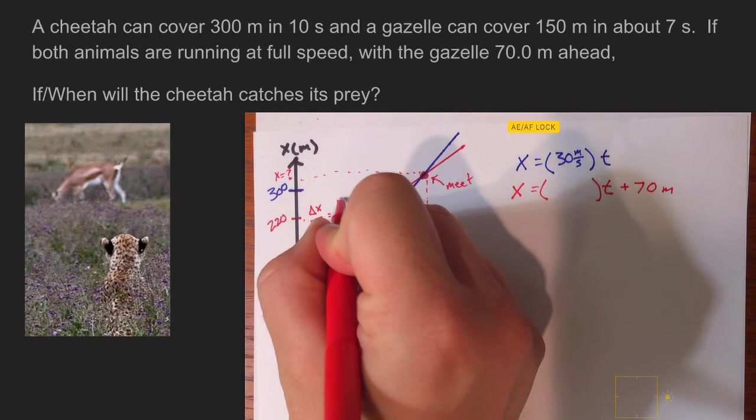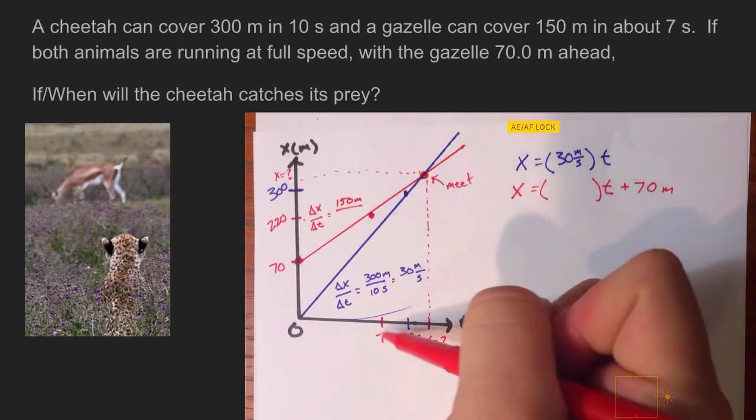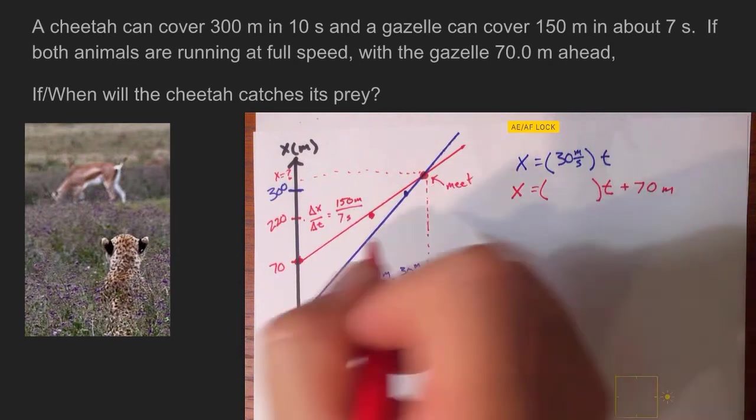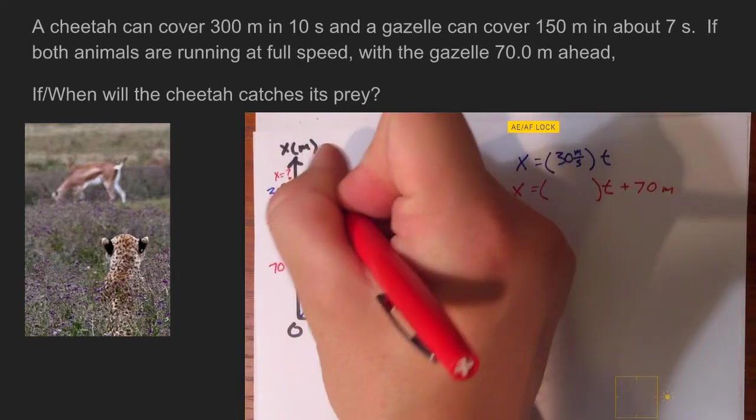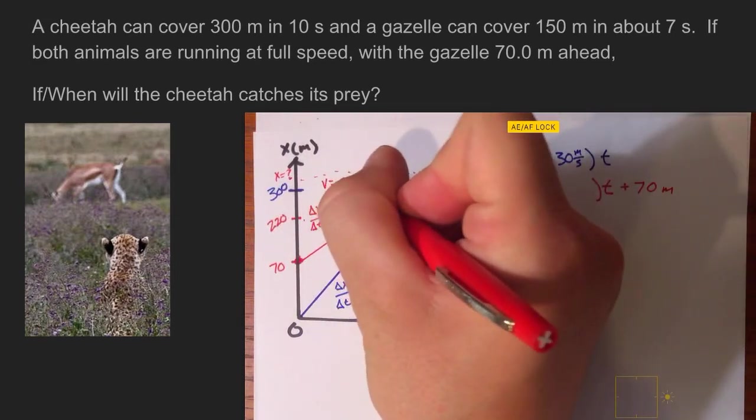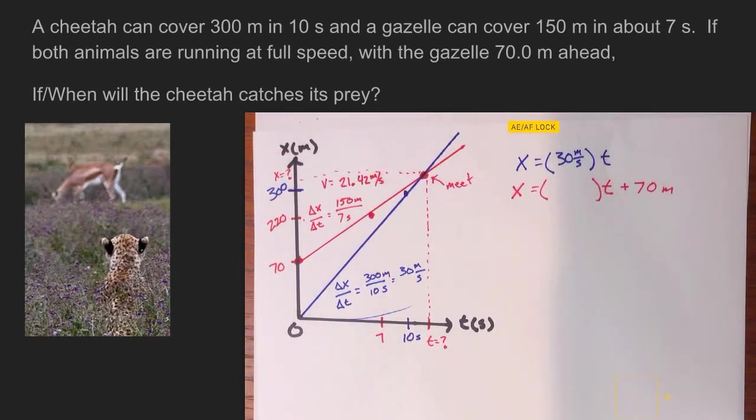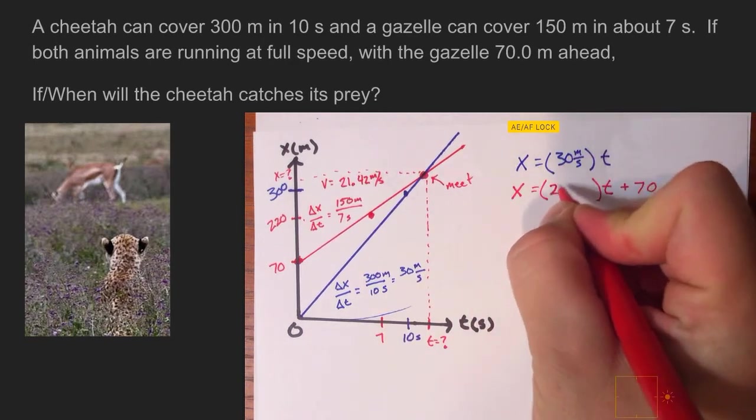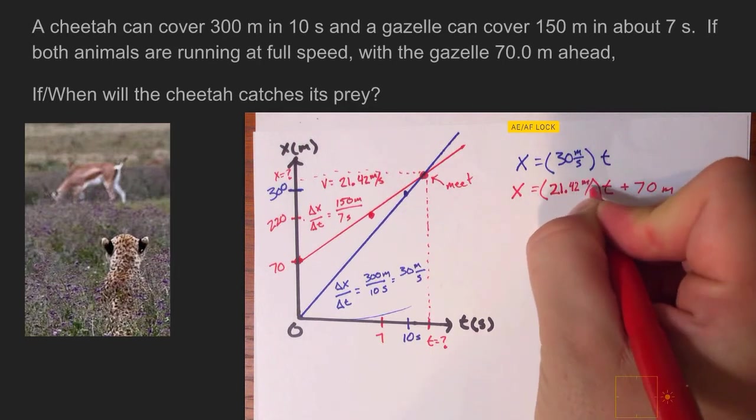And how many seconds does it take for that to happen? Well, according to the problem, it takes seven seconds. So if you go ahead and you get your calculator out, which you should do, you would take 150 divided by seven, and what you get is a velocity of 21.42 meters per second. So the gazelle isn't quite as fast as the cheetah. The gazelle can only cover 21 meters every second. Not so good when you're trying to run away from something that wants to eat you.